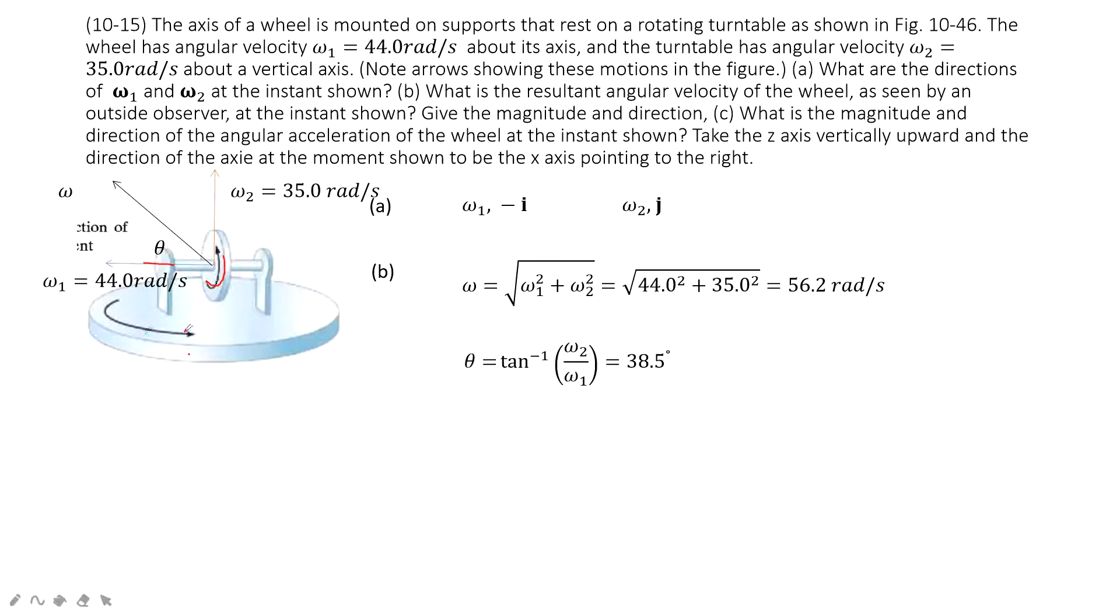This is omega 1. Similarly, we can get the direction for omega 2. It's just up for this circle. So omega 2 is vertically up, and omega 1 is negative i component.